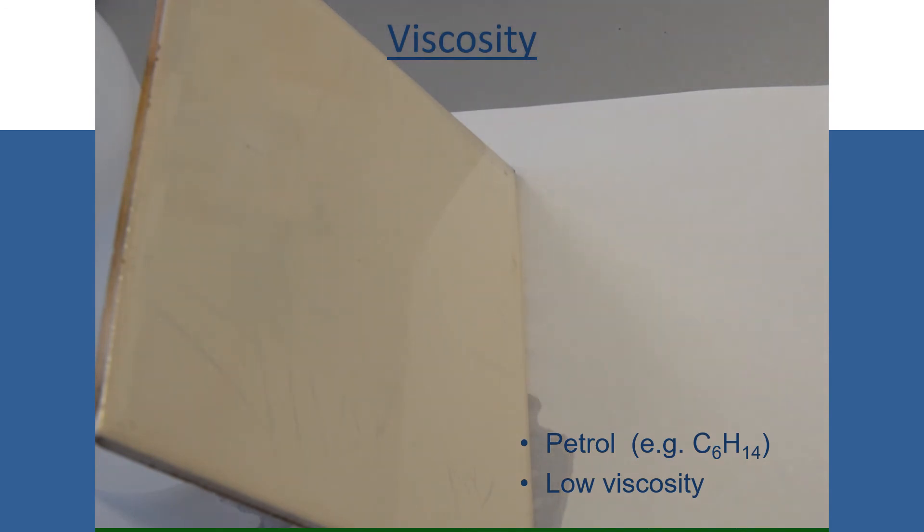Now if I look at kerosene and you'll know that kerosene is a larger hydrocarbon, it's got more carbon atoms in it. You can see it's a yellow colour, it's a darker colour and you can see quite clearly it's a more viscous solution. It's taking longer to run down the white tile.